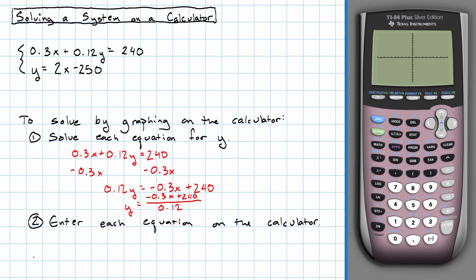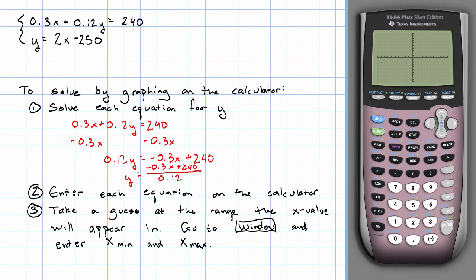I'm going to take a guess at what range my x value will appear in, and I'm going to go to window and enter my guess. I really have no idea with this equation, but I suspect it's going to be a big number. So I'm going to say negative 1,000 to 1,000.